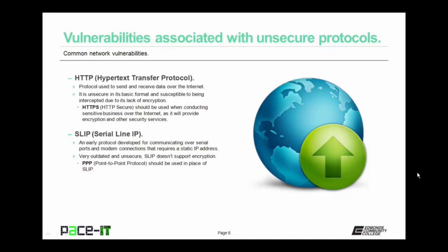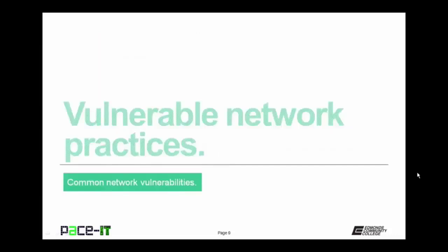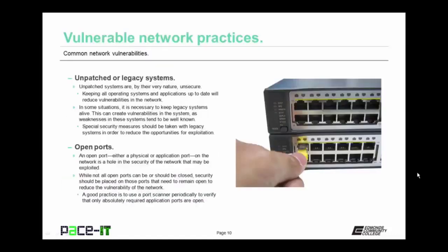Now it's time to talk about vulnerable network practices. First up are unpatched or legacy systems. Unpatched systems are by their very nature unsecure. Keeping all operating systems and applications up to date will reduce vulnerabilities in the network and helps to harden it against attack. In some situations it is necessary to keep legacy systems alive, which can create vulnerabilities as weaknesses in these legacy systems tend to be well known. Special security measures should be taken with legacy systems in order to reduce the opportunity for exploitation. One of the best security steps is placing these legacy applications or systems on their own network or their own virtual local area networks.